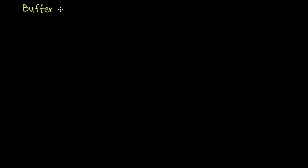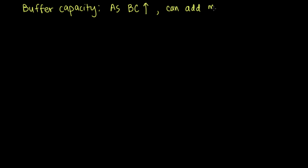Let's talk about buffer capacity. Buffer capacity is a property of a buffer, and it tells you how much acid or base you can add before the pH starts changing. As your buffer capacity goes up, which I'm going to abbreviate BC, you can add more of your acid or base before the pH starts changing a lot. That might seem like a pretty vague and qualitative definition, so let's go through an example to see what that might look like exactly.